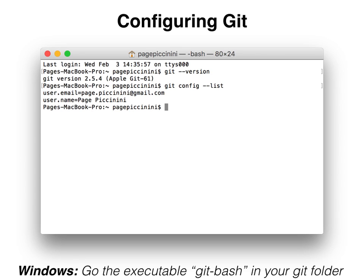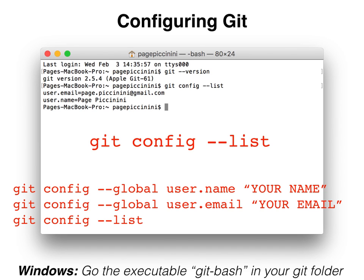For configuring git, we're basically giving information about who you are, so that when you commit to git, you'll have a record of who did it. This can be important if you have multiple people working on the same document — you want to know who made what changes when. First, we're just going to check and see if you have any configurations by typing git config space hyphen hyphen list. If you're on a Unix-based machine and have no configurations, nothing will be displayed. If you're on Windows, you might see a long list but not necessarily your name or email. If you don't see your personal information listed, you're going to want to type in the following commands, making sure to replace your name and email with your actual details.